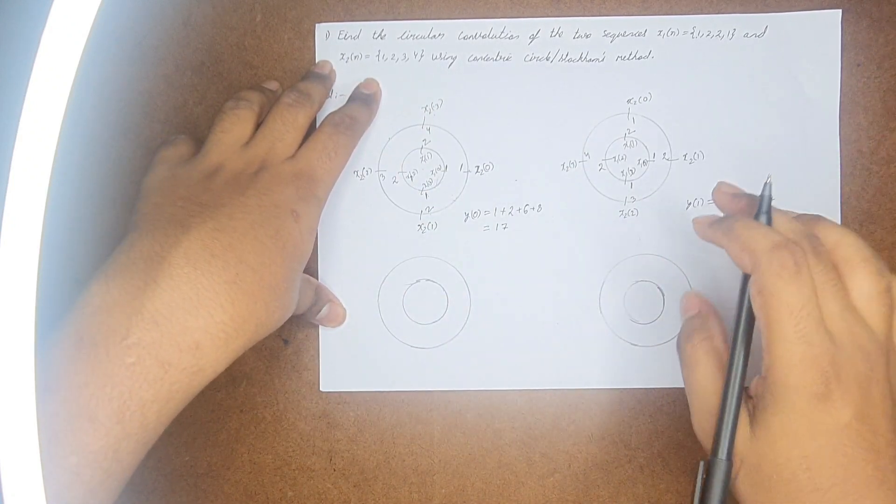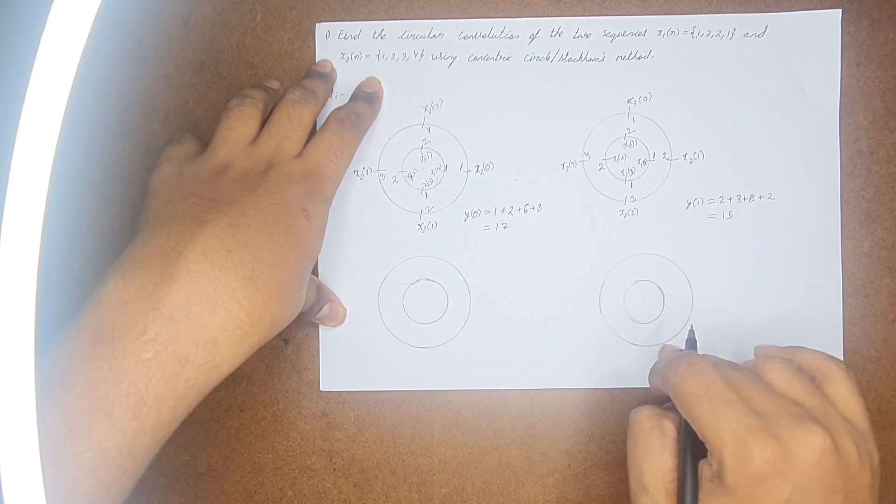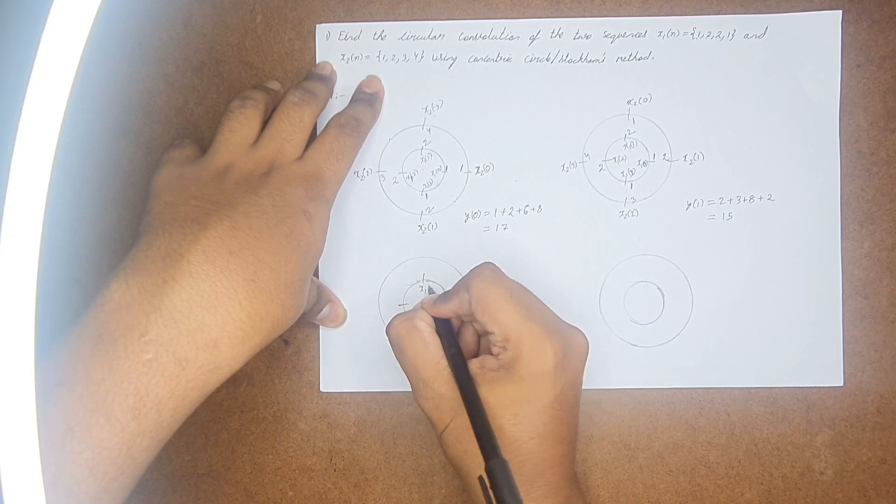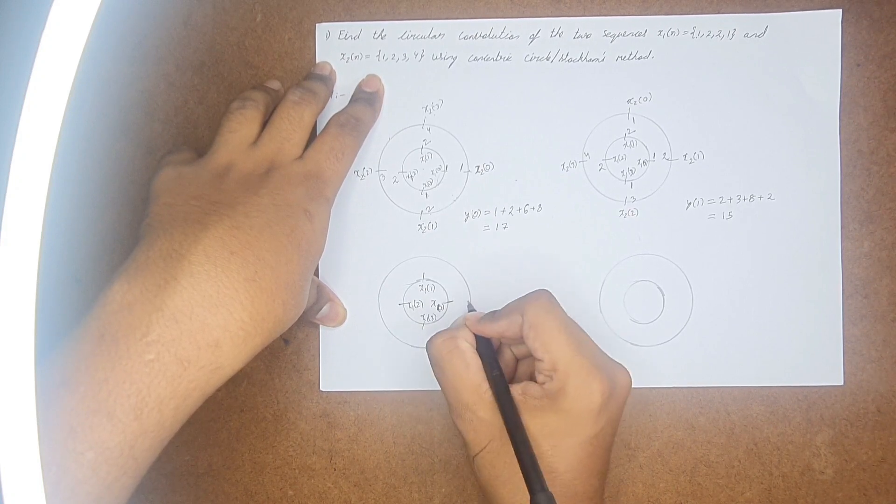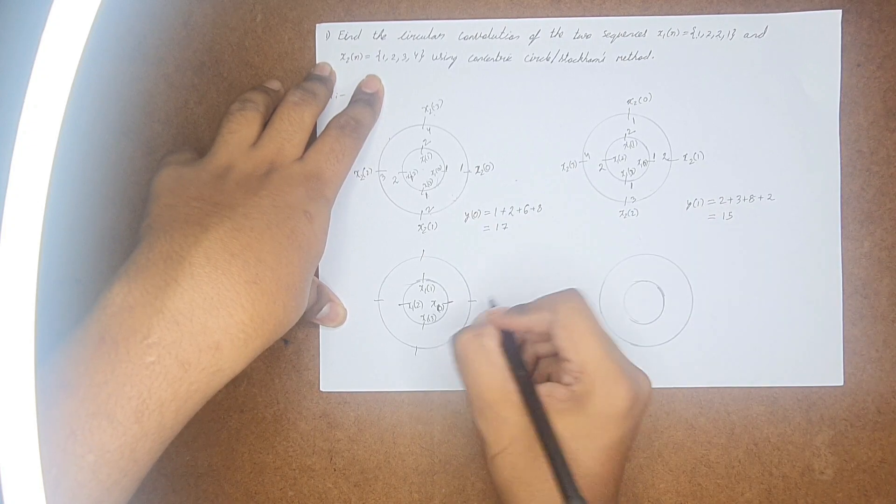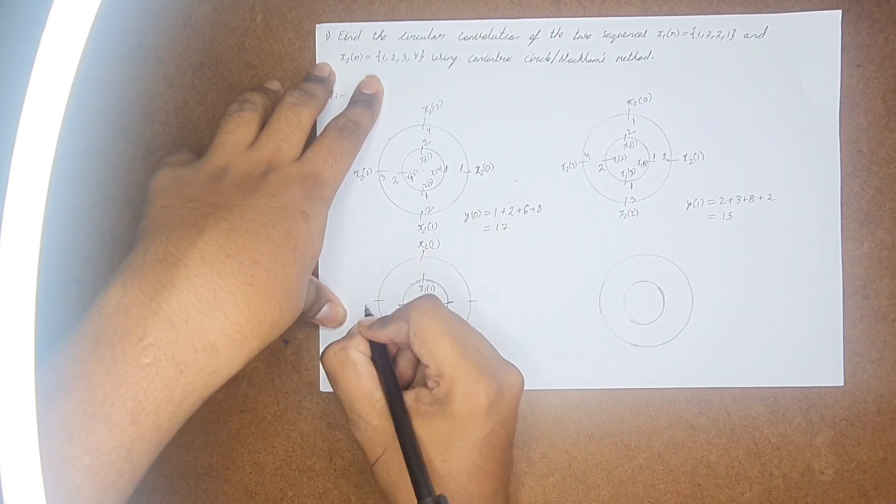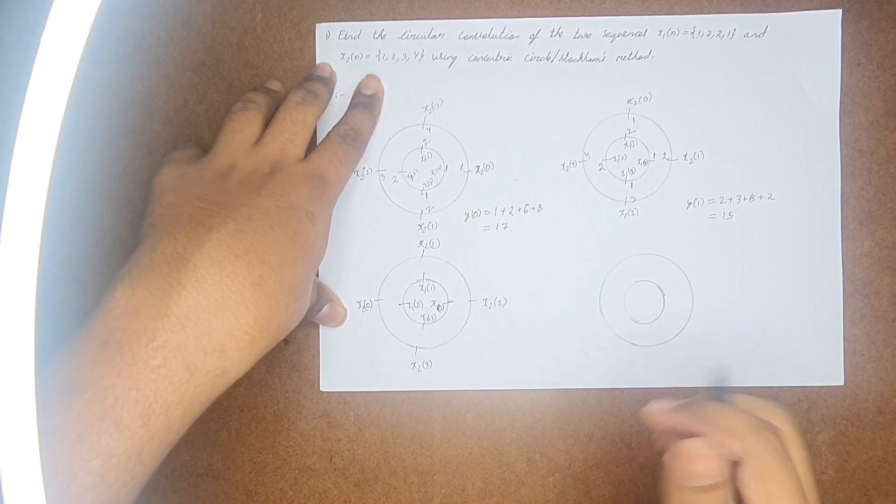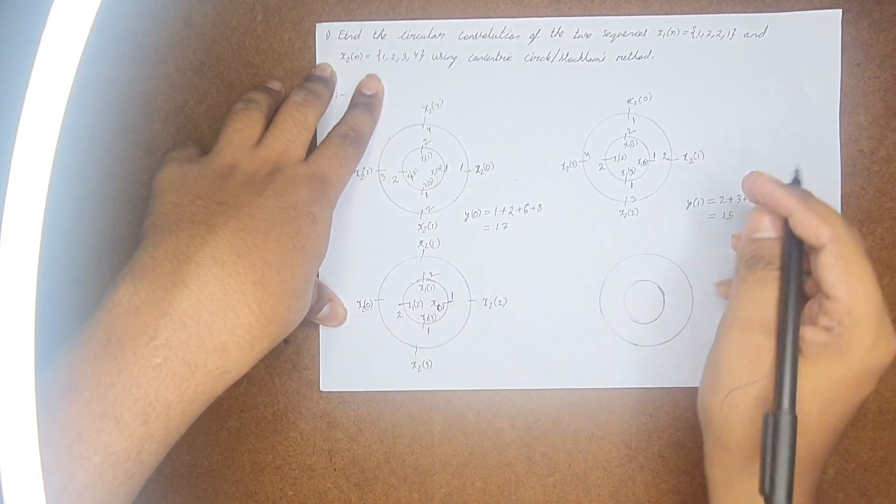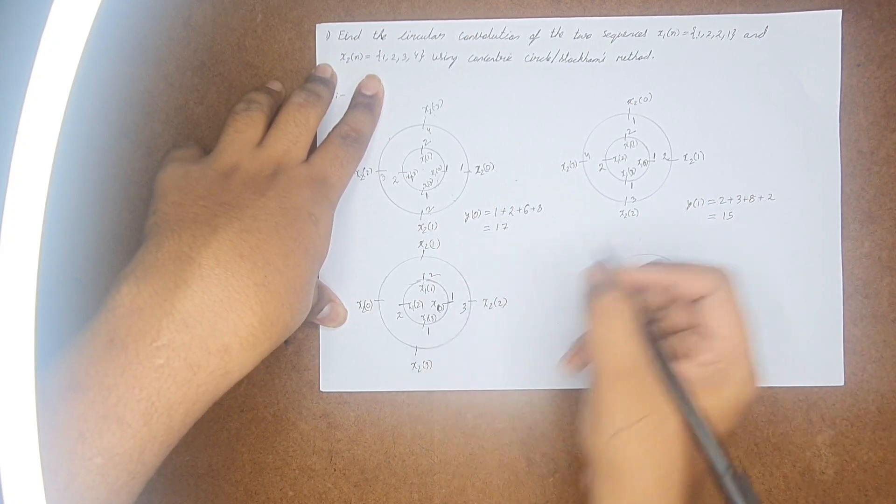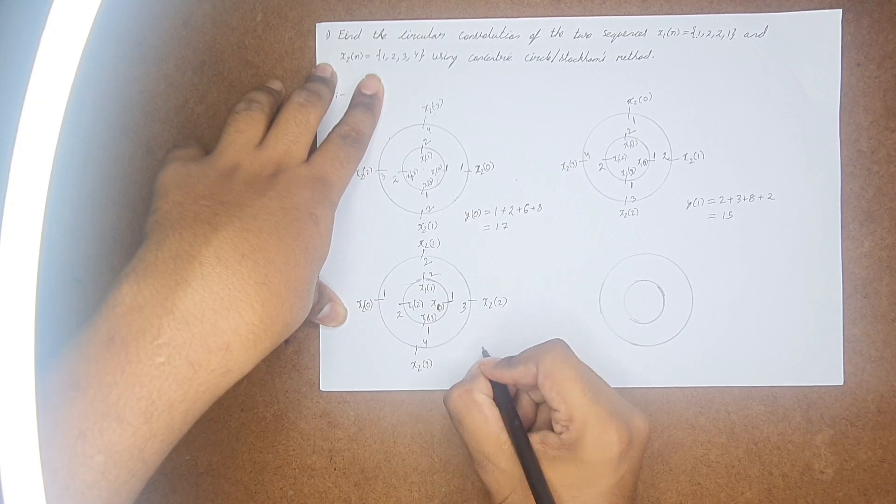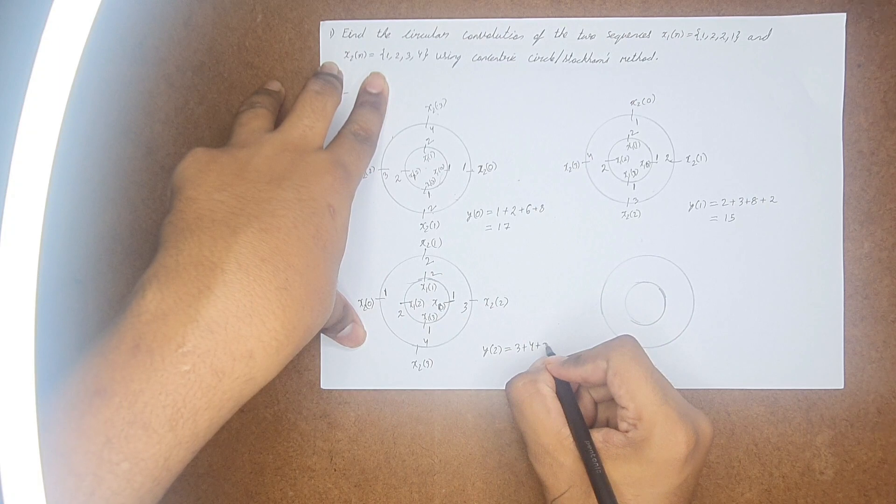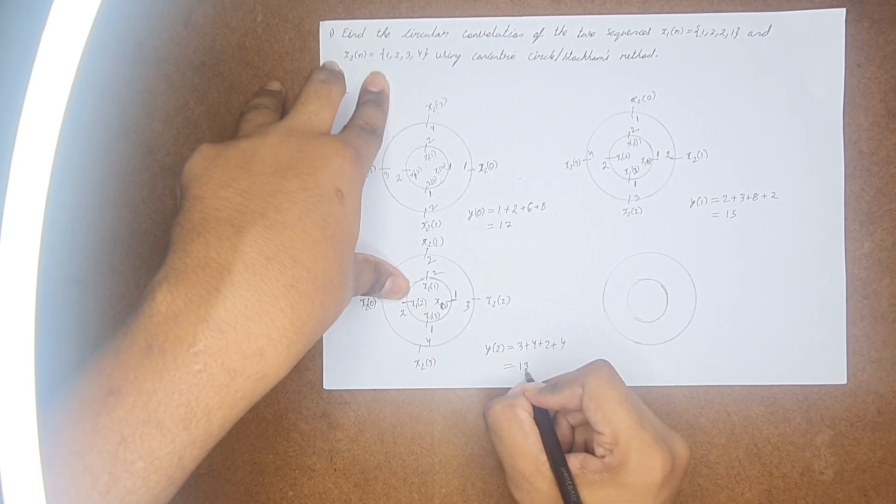Similarly, let us find y(2). Now we have found y(1). This is x1(0), this is x1(1), this is x1(2), and this is x1(3). This is the outer circle. And again, you will be moving in this direction. So this will be x2(1), this is x2(0), this is x2(3), and this is x2(2). Now again, write the values: 1, this is 2, this is 2, this is 1. And the outer values are: this is 3, 2, 1, and this is 4. Now let us find y(2), which will be 3 plus 4 plus 2 into 1 which is 2, plus 4, which is 8, 10, which is 13.